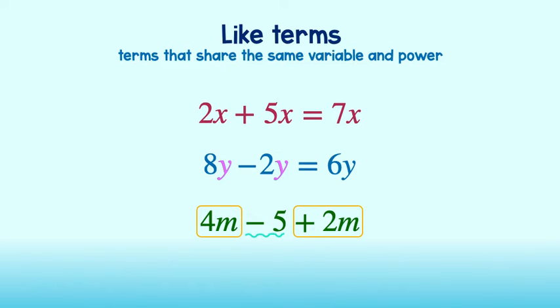The commutative property of addition allows me to combine like terms even though they are not right next to each other. 4m plus 2m is equal to 6m. I will cross these out because I combine them. And don't forget the negative 5. The negative 5 does not combine with anything and so our simplified expression is 6m minus 5. Good job!